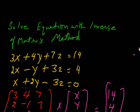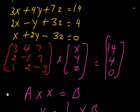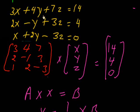With the inverse method, we can solve this system of equations. First of all, we will simplify these equations. The coefficients 3, 2, 1, 4, -1, 2, 7, 3, 3 are covered in a matrix and multiplied with x, y, z. If we multiply these, we can find the result. On the right side, 14, 4, 0 form another matrix.